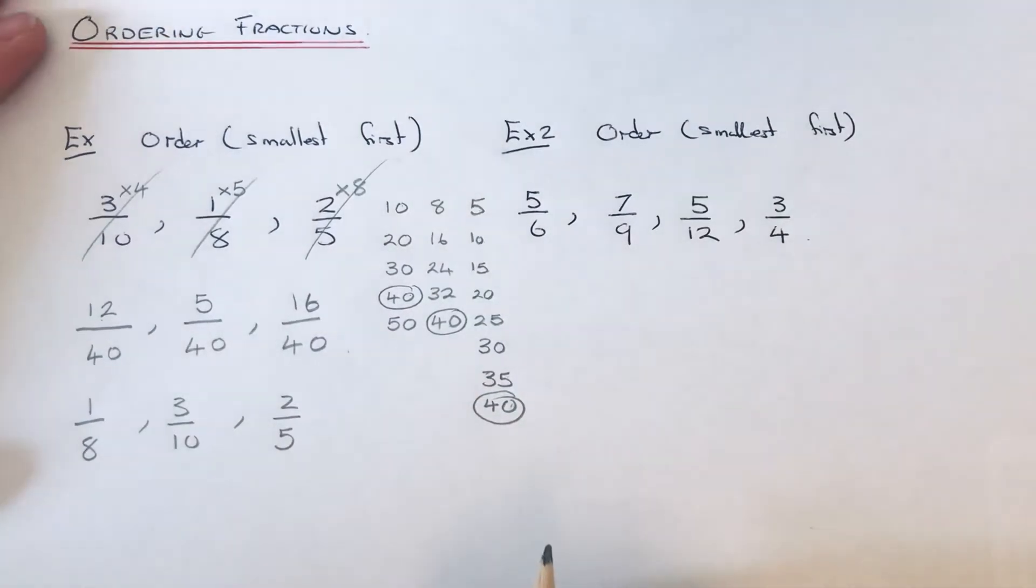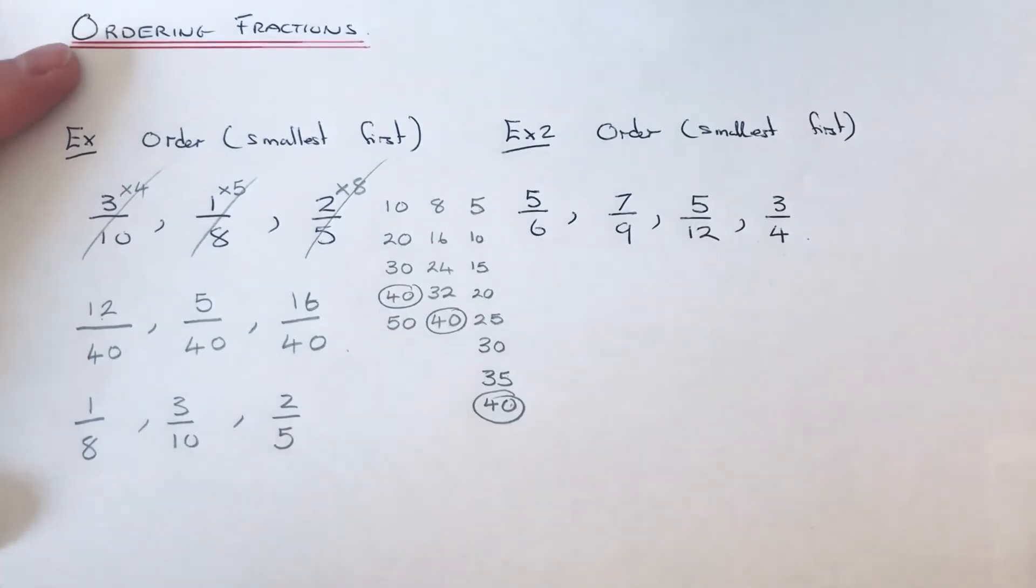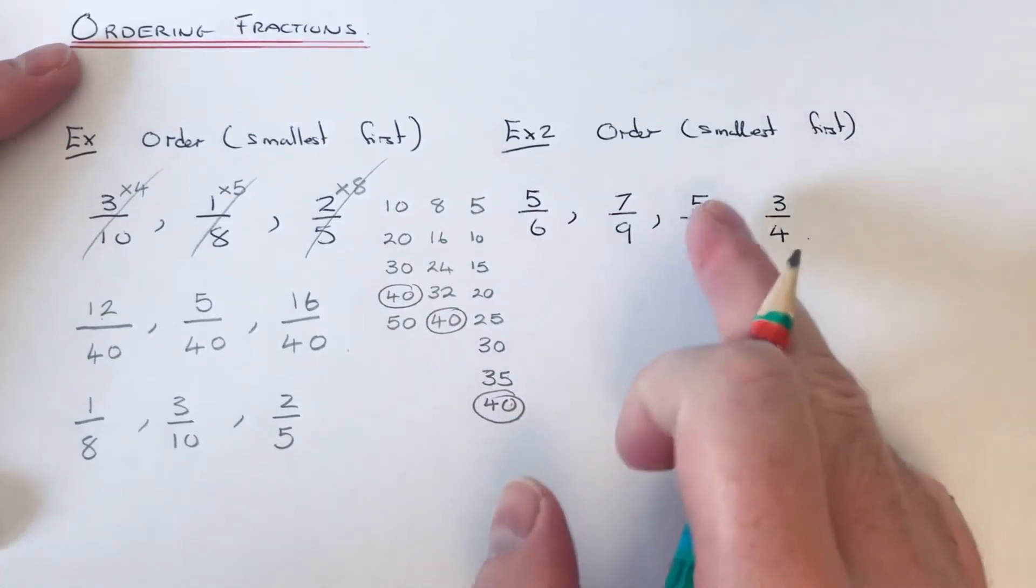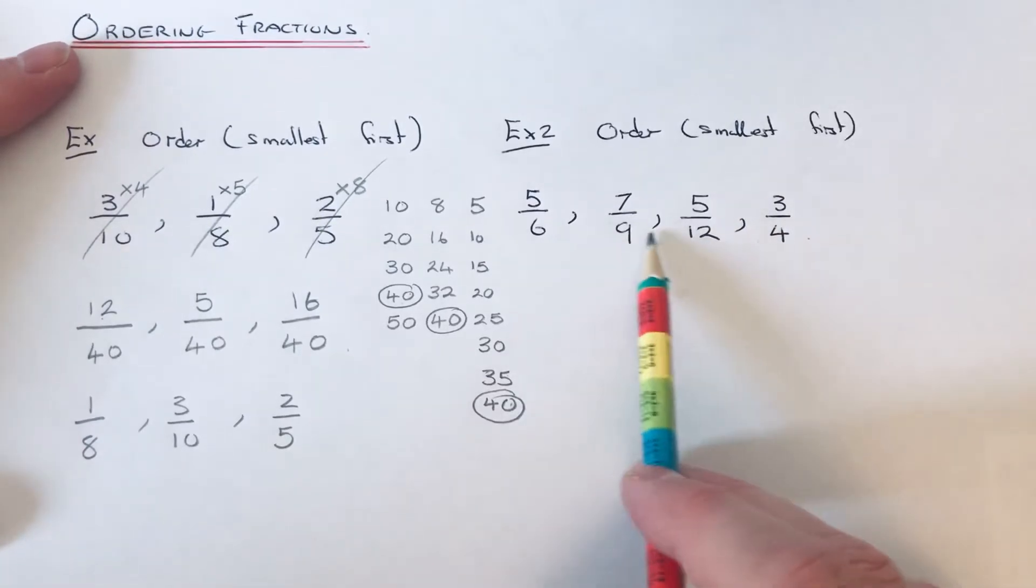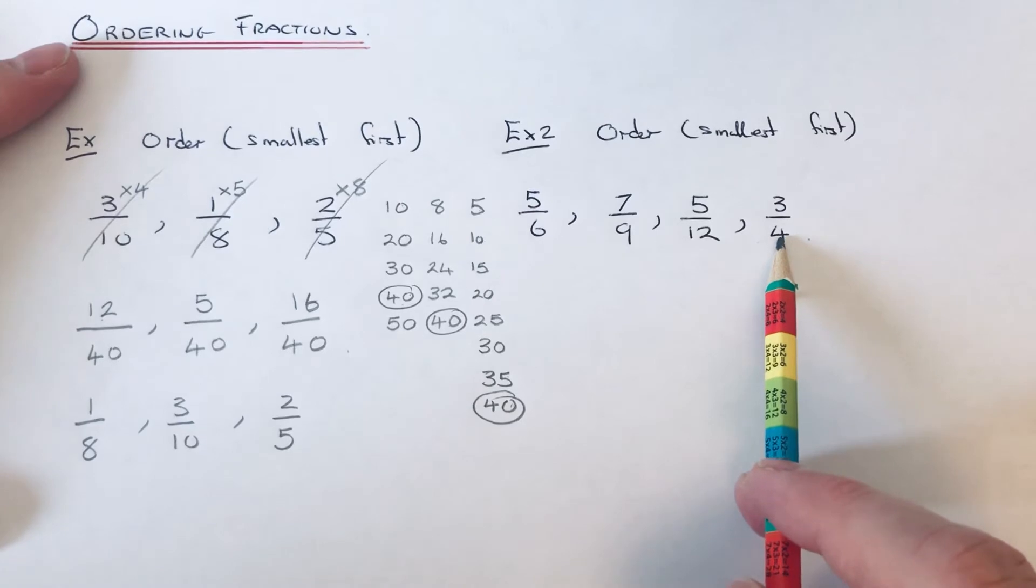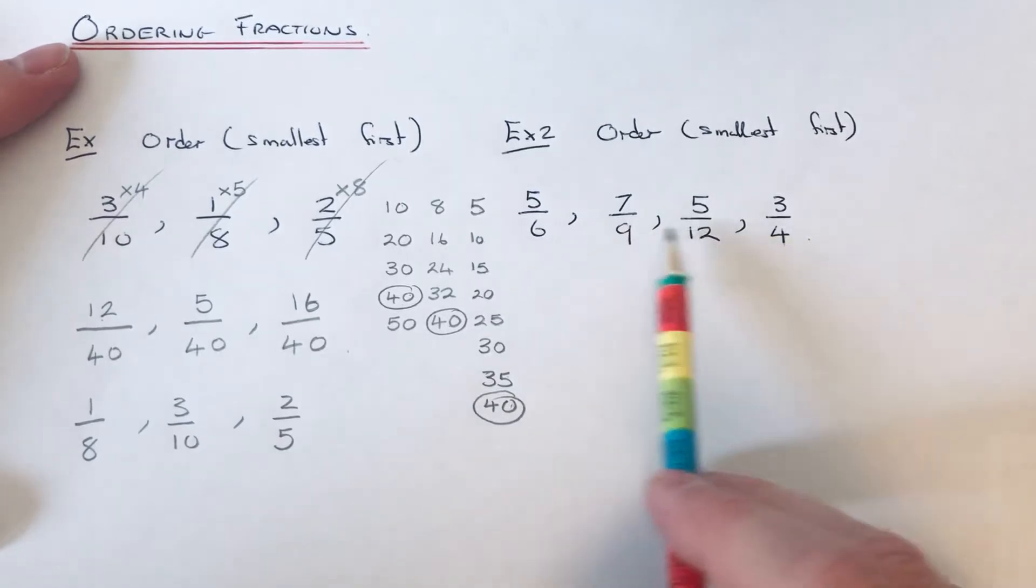Let's have a look at our second example. This time we've got four fractions: 5/6, 7/9, 5/12, and 3/4. We need to make the denominators of all the fractions the same, so we need to look for our lowest common multiple of 6, 9, 12, and 4.